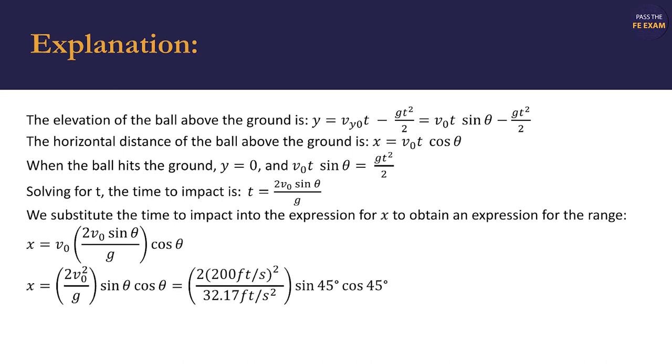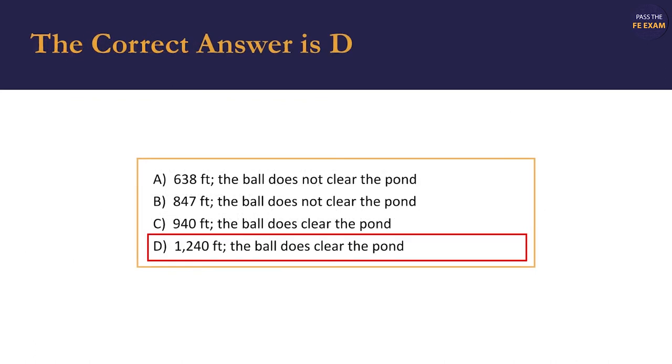We substitute in our known values: 45 degrees for theta, 200 feet per second for the initial velocity V sub zero, and 32.17 feet per second squared for our gravitational constant G. We can then solve for X and we find that the ball travels approximately 1,243 feet. This most closely aligns with answer D, which states that the ball travels 1,240 feet and does clear the 900 foot pond. Accordingly, we choose this answer.